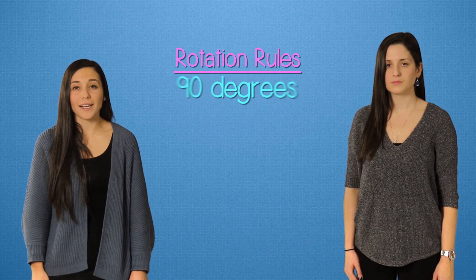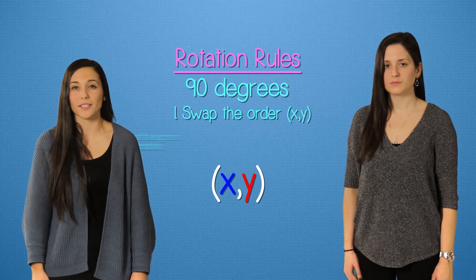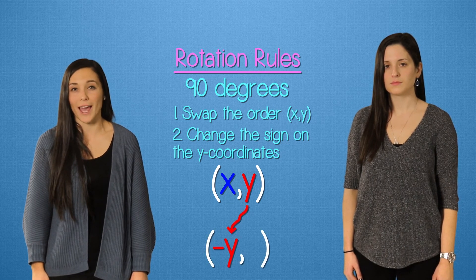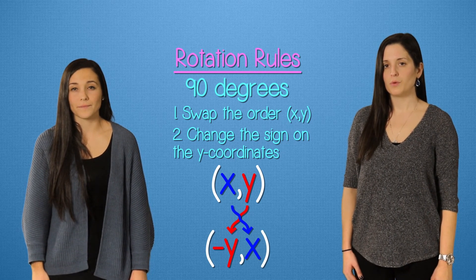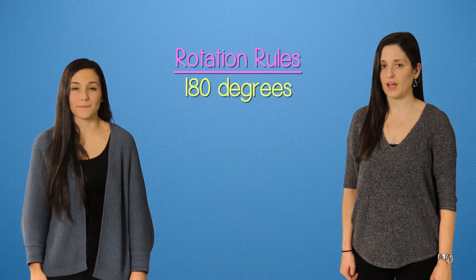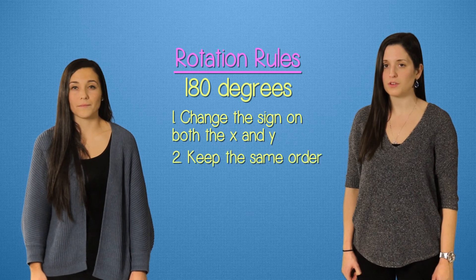When rotating a figure 90 degrees, we take each point and swap their order, as well as change the sign on the y-coordinates, so (x,y) becomes (y,-x). When rotating a figure 180 degrees, we need to take each point and change the sign of both x and y while keeping their order the same, so (x,y) becomes (-x,-y).